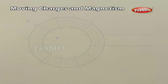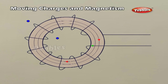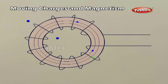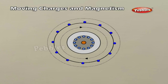The toroid is a hollow circular ring on which a large number of turns of wire are closely wound. The magnetic field in the open space inside (point P) and exterior to the toroid (point Q) is zero. The figure shows a sectional view of the toroid. The direction of the magnetic field inside is clockwise as per the right-hand thumb rule for circular loops.